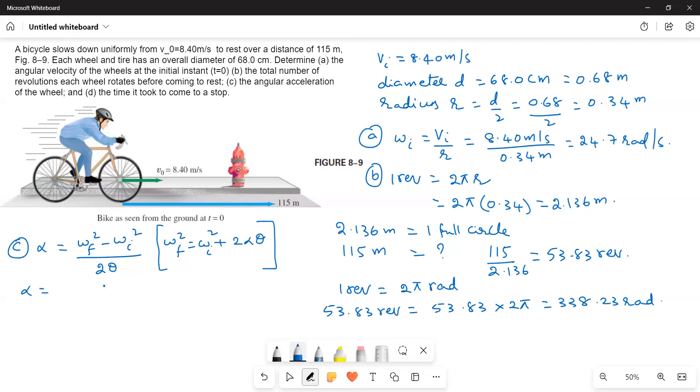What is ωf? Zero, because the bike is coming to a stop. ωᵢ we already found: 24.7. So α = (0 - 24.7²)/(2 × 338.23 radians) = -0.9018 rad/s².